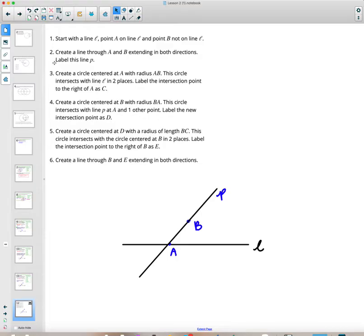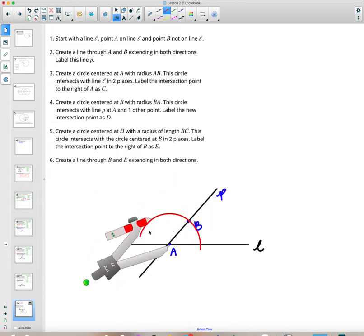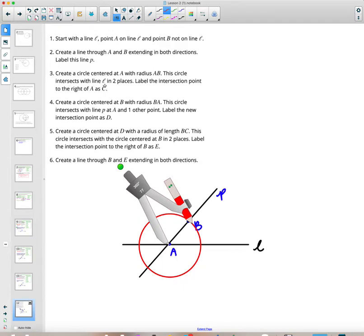We've done number one and number two. Now, it says create a circle. That's with your compass. We want to create a circle that is centered at A and has a radius AB. Remember, center means put the metal point there. Radius means open your circle to that length. Then we're going to draw a circle. It says label this circle intersects line L. Line L is this one. The red circle is intersecting that line in two places. Label the one to the right of A. To the right of A, label that point C.